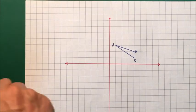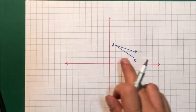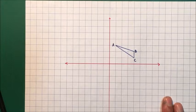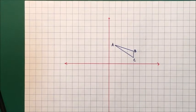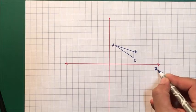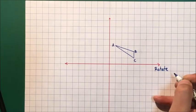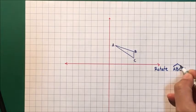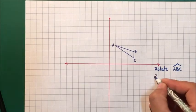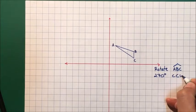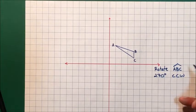We've got a rotation problem coming up. What we want to do is take this triangle ABC and rotate it. I'll just write down the instructions so that's clear. We're going to rotate triangle ABC 270 degrees counterclockwise.